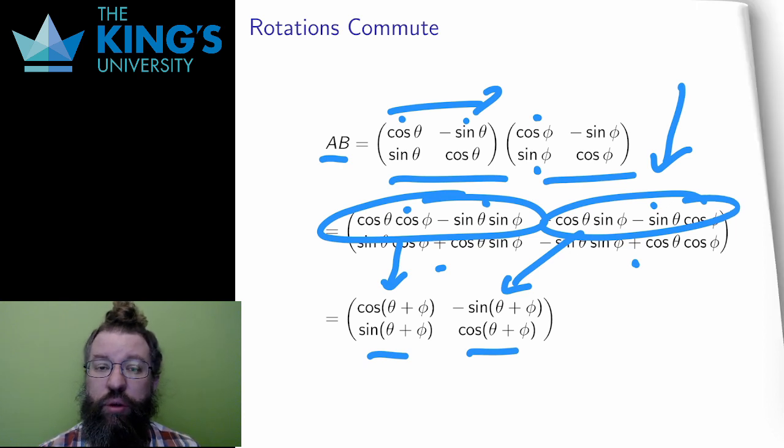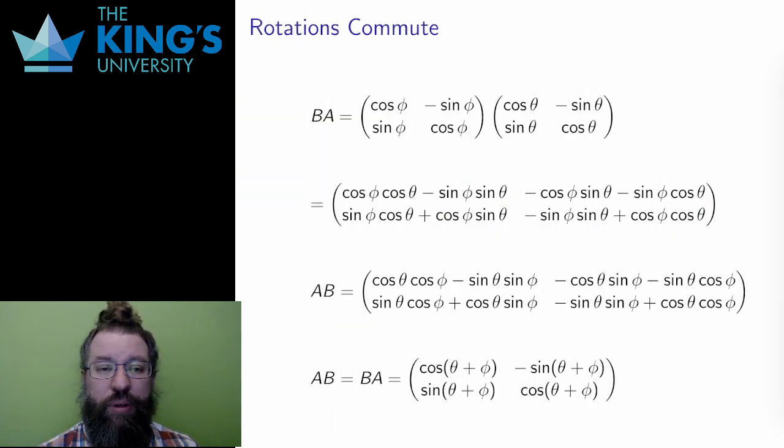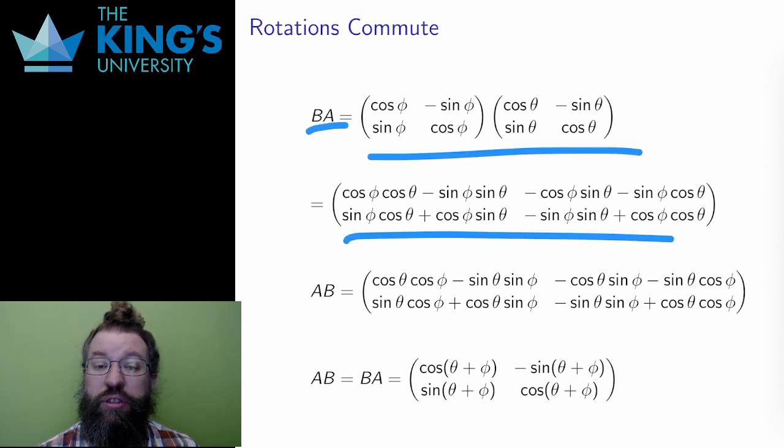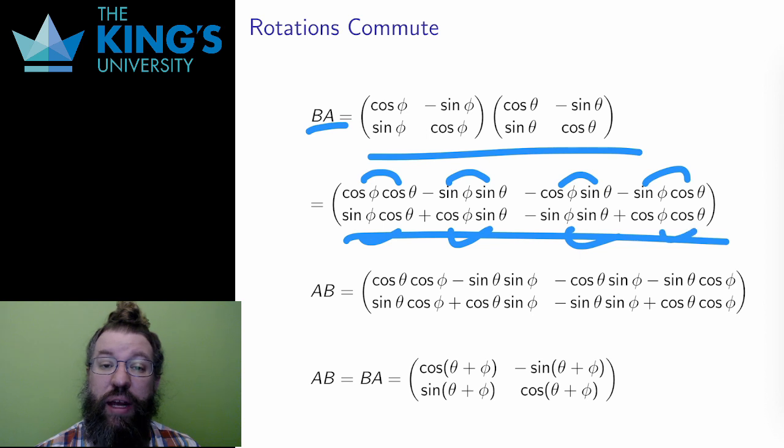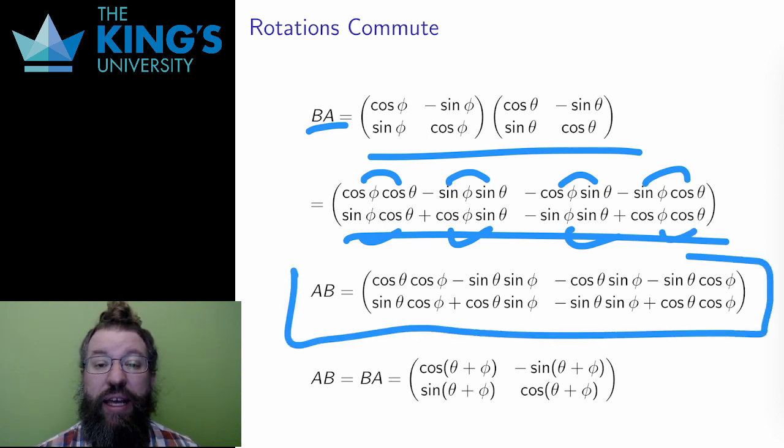But let me try the other order to make sure this lines up. The calculations here are similar, but the phi matrix is first. The result I get, skipping over the details of the calculation, looks very similar. Indeed, if I interchange the multiplications of the terms, which is valid since I'm multiplying numbers here, then I can actually get directly that BA is the same as AB.